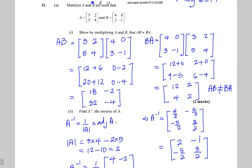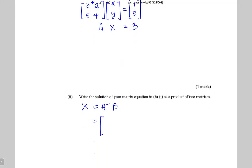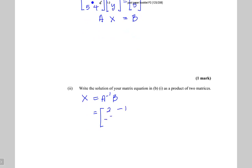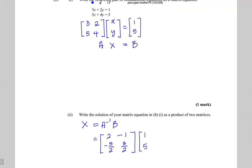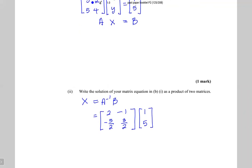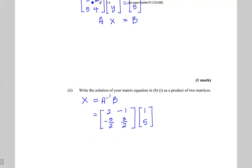A inverse is 2, minus 1, minus 5 over 2, 3 over 2, times B which is 1, 5. The examiner says write the solution of your matrix equation as a product of two matrices — he did not say solve it. X, which is what I want to find, equals A inverse times B. If you multiply these two matrices you would get the values for the simultaneous equation, but he only asked us to write it.